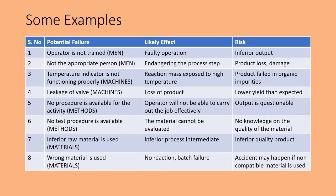Similarly, if not the appropriate person — that means he is not the right person to do the job — he endangers the process step, resulting in product loss or damage. The temperature indicator is not functioning properly — this is a part of the machine — so the reaction mass is exposed to high temperature, and the product can fail in organic impurities or other failures. A leakage of valve leads to loss of product, and the risk is a lower yield than expected.